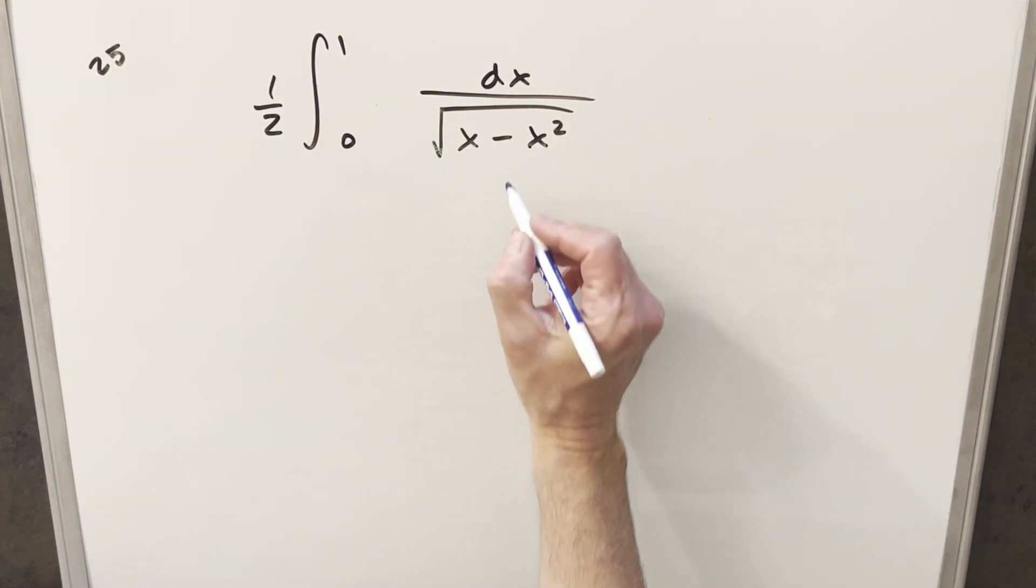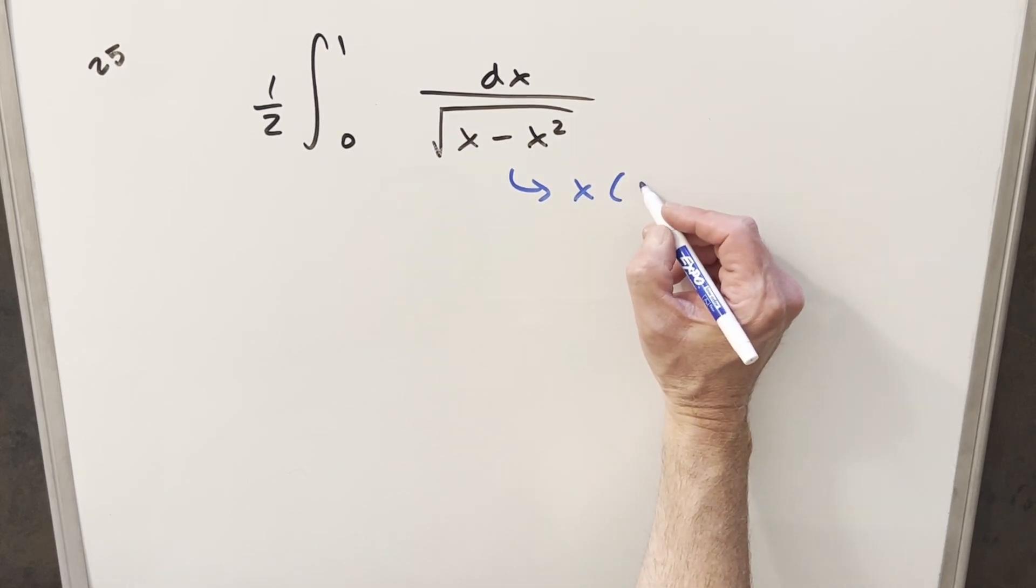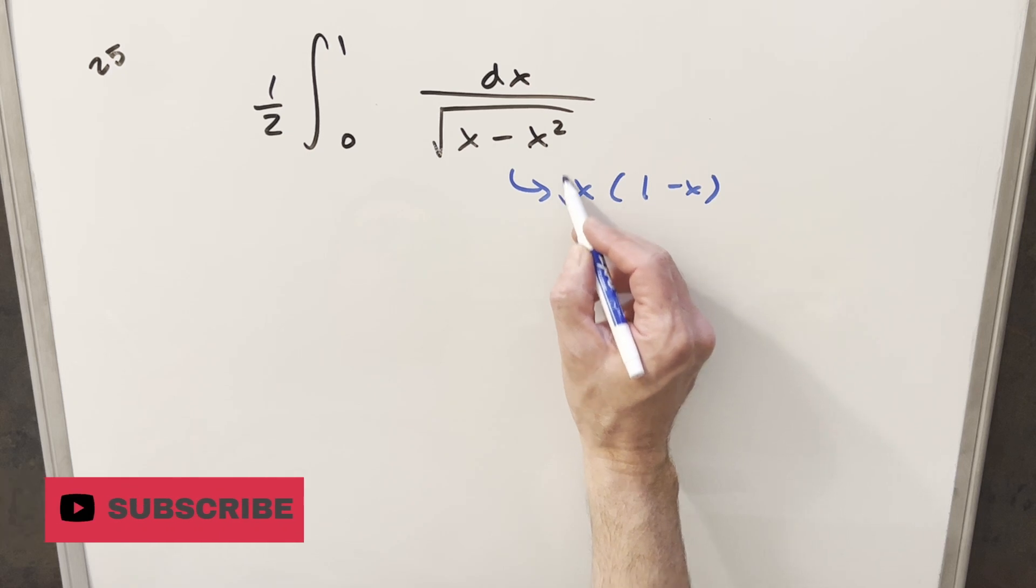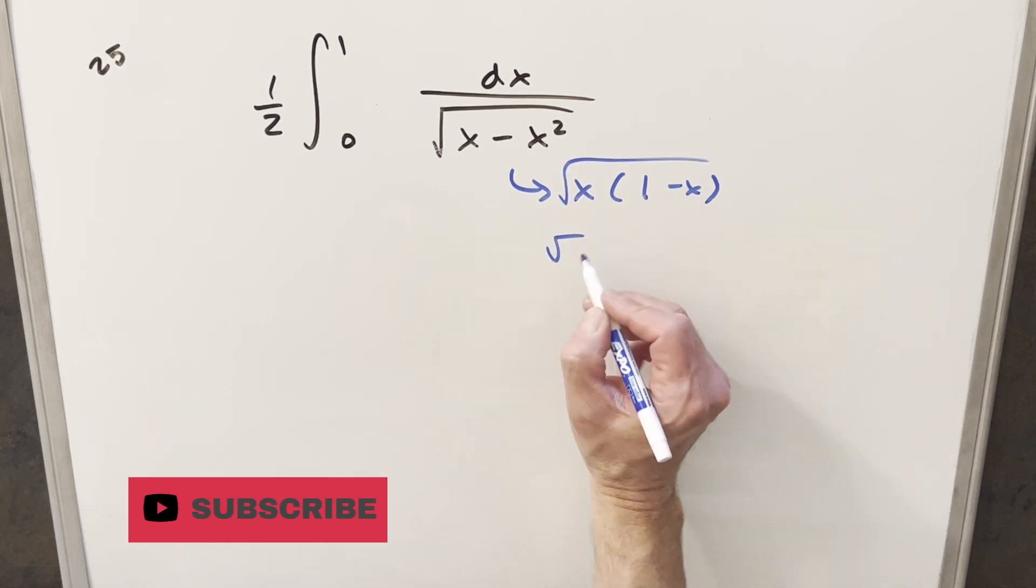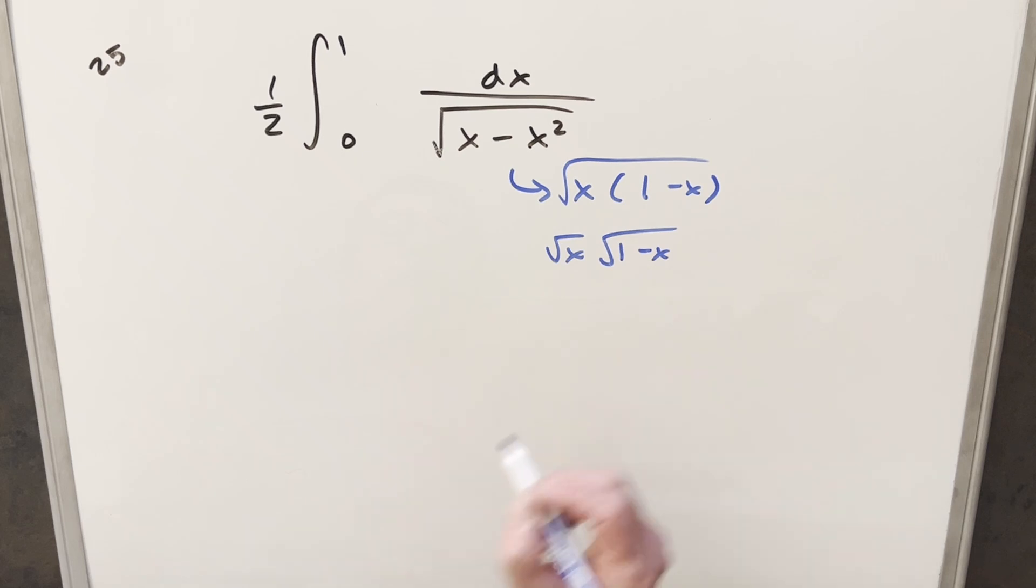And then from there, what I want to do is the same thing I did in the other video. Let's just factor this. I can factor this as x times 1 minus x. And of course, this is all in the square root. So I can actually break this up and write it as square root of x times square root of 1 minus x.